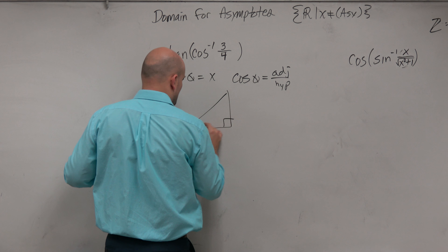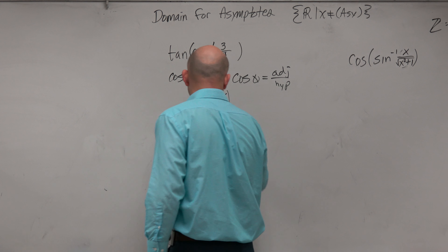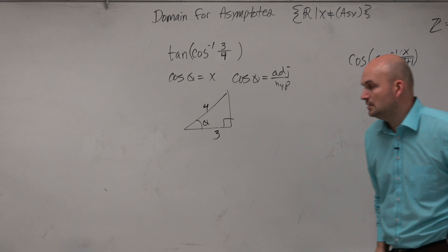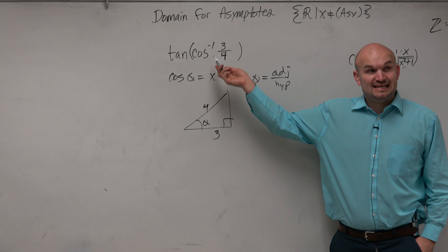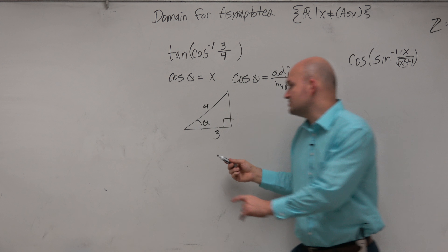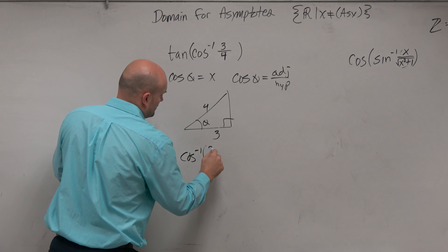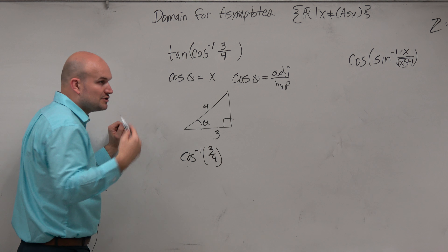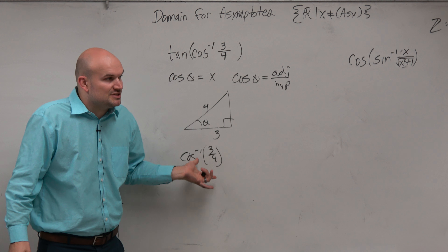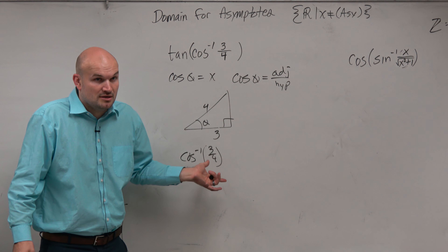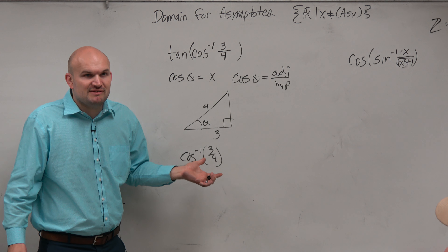The problem with most students is we've spent so much time in the last three or four days talking about the unit circle, everybody's fixated on the unit circle. They see cosine and say cosine of angle equals the x-coordinate. But again, that's for the point on the unit circle. And then we see 3/4, and we don't recognize 3/4 as a point on the unit circle that we're familiar with.